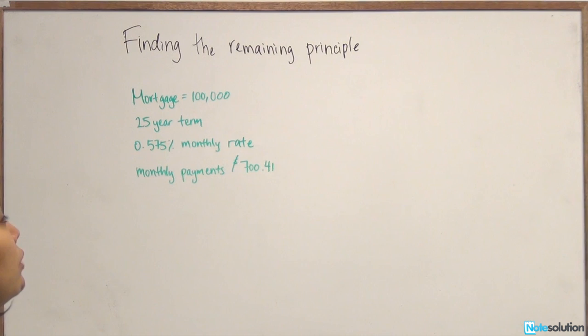At the inception of the mortgage, the present value was $100,000. Now that we've paid down 24 months' worth of interest and principal, how much of the principal is remaining? So we need to find the principal. You need to calculate the present value given all of your inputs.